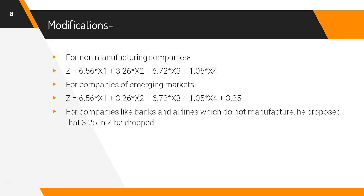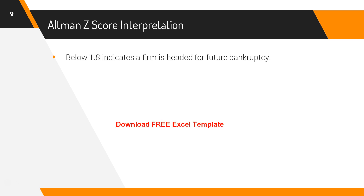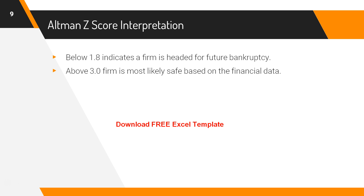Now let's see how to read Altman's Z-score. A score below 1.8 indicates a firm is headed for bankruptcy. Above 3.0, the firm is most likely safe based on the financial data. Between 1.8 and 3.0 is a gray area, and the investor should analyze the company deeply before investing their hard-earned money.